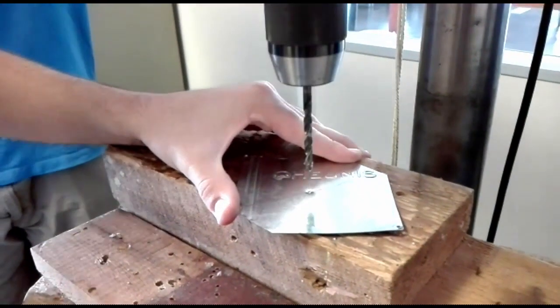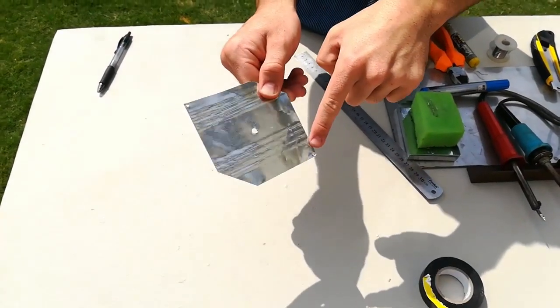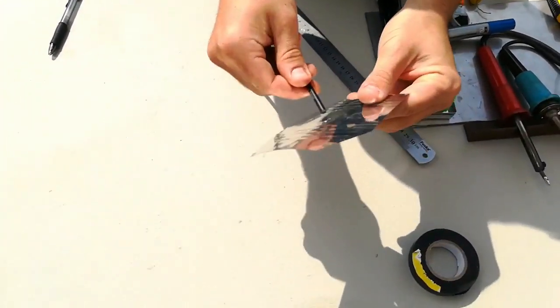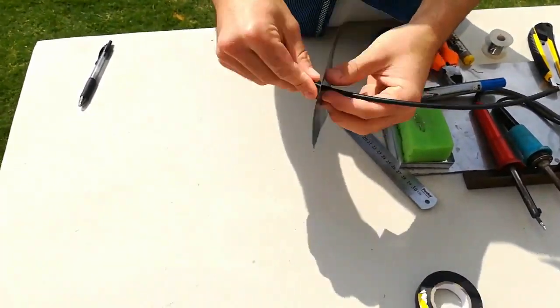Drill a hole in the center just large enough to fit the coaxial cable through. On one tip, drill a hole just large enough to fit the inner insulation of the cable and on the other tip, a hole just large enough to fit the inner conducting strands through.